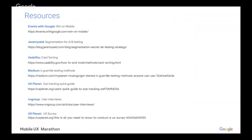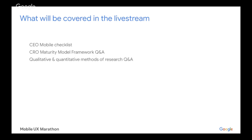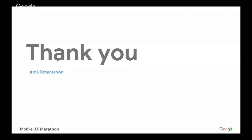The qualitative and quantitative methods will also be available to download as a PDF. We will have a live stream where we're going to cover the mobile CRO checklist, the CRO maturity model framework Q&A, and the qualitative and quantitative methods of research Q&A. Please submit your questions and we will make sure that we answer them live on air — depending on what the questions are, we might even bring in some guest speakers to help answer them. It's really important that we customize the live streams as much as possible. Thank you so much for watching — you can find more resources on the Mobile UX Marathon website, which has all of the information and resources we discussed today.